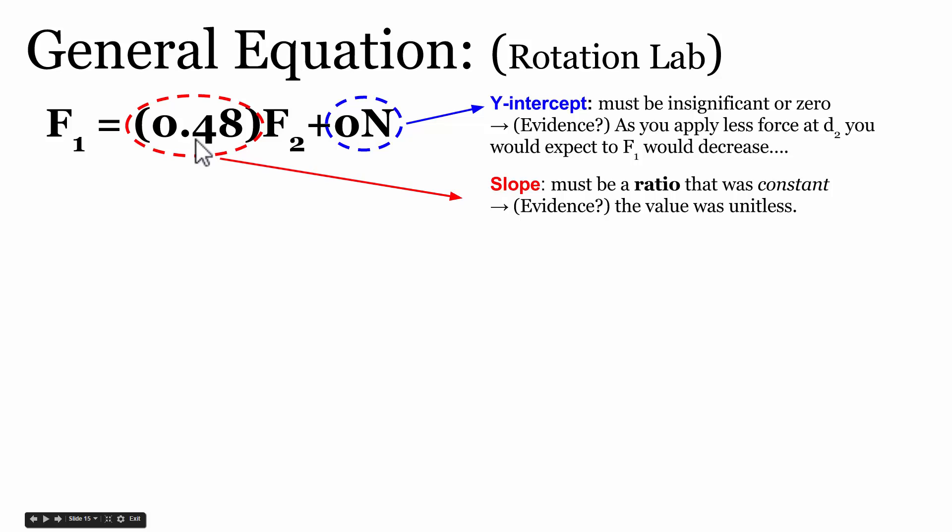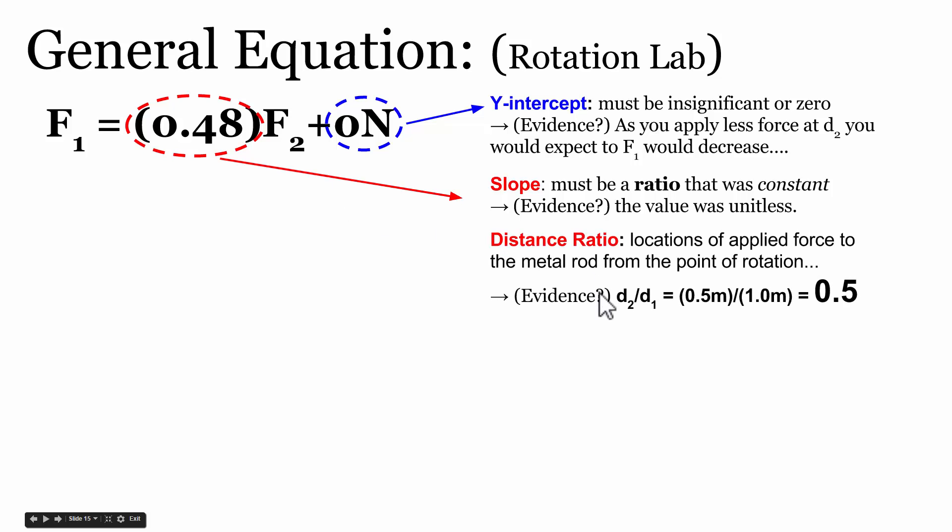Several students noticed that their value is really close to the ratio of distance 2 divided by distance 1. In this case, this group's second distance where they applied their independent variable force, or F2, was half a meter away from the point of rotation, and F1 for everybody was one meter away. So the ratio of their D2 to D1 was 0.5 meters divided by one meter, which was 0.5. So the ratio of their distances where the forces were applied from the point of rotation was about a half, and their slope was about a half.